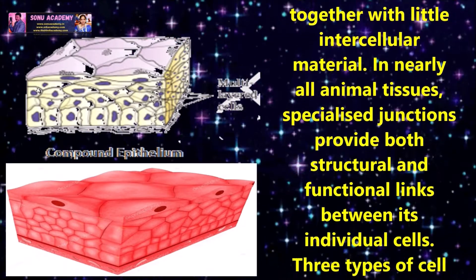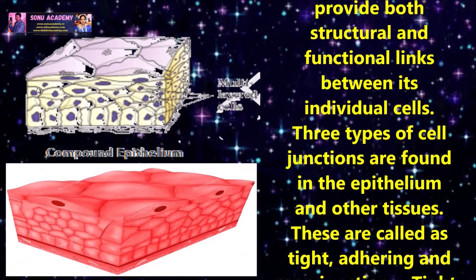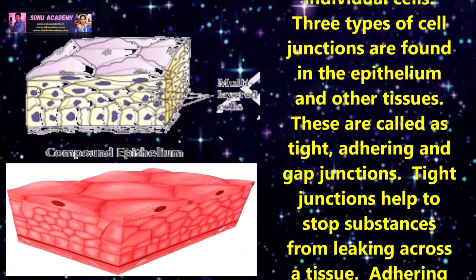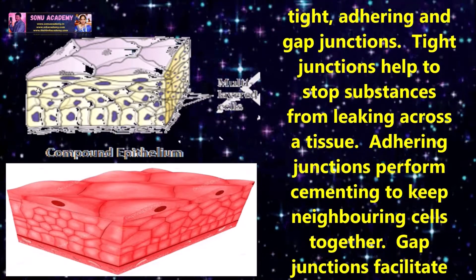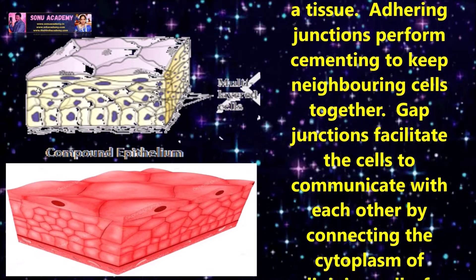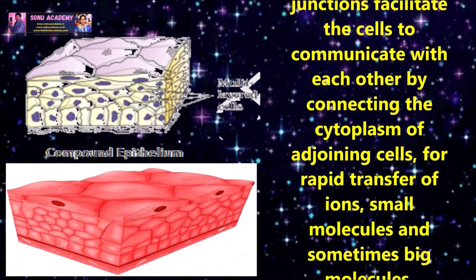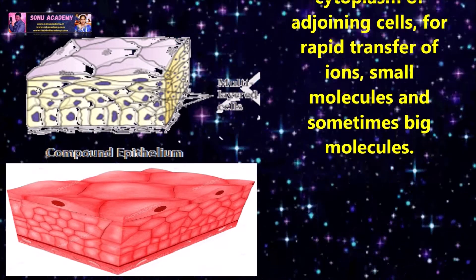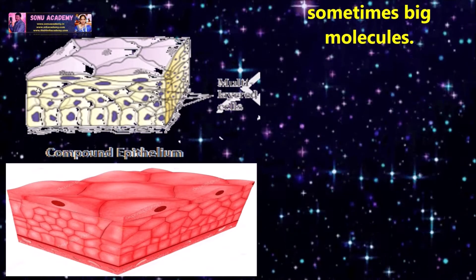In nearly all animal tissues, specialized junctions provide both structural and functional links between individual cells. Three types of cell junctions are found in the epithelium and other tissues: tight junctions, adhering junctions and gap junctions. Tight junctions help to stop substances from leaking across the tissue. Adhering junctions perform cementing to keep neighboring cells together. Gap junctions facilitate the cells to communicate with each other by connecting the cytoplasm of adjoining cells for rapid transfer of ions, small molecules and sometimes large molecules.